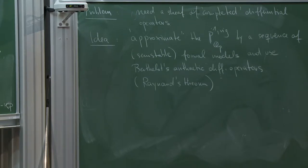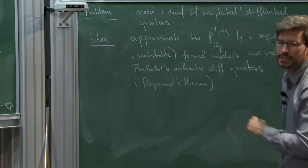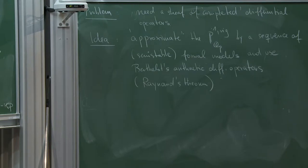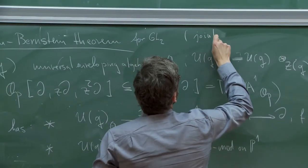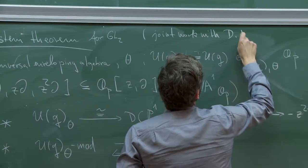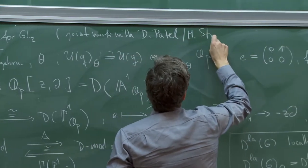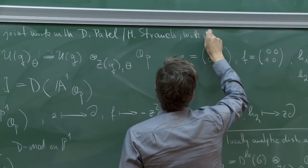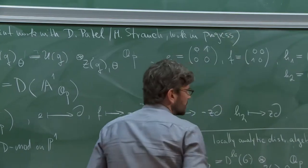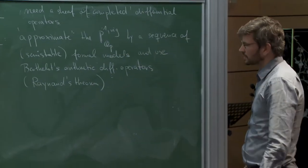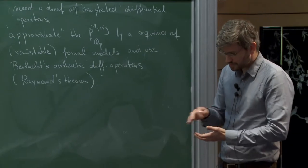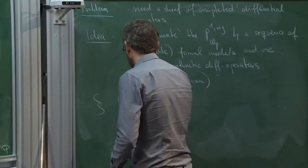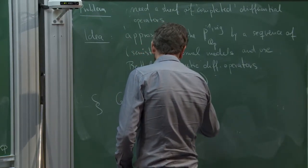The choice of the formal model will correspond to something on the Lie algebra side — you will get different things on the Lie algebra side. I will only deal with a certain sequence of semi-stable models, not with all semi-stable models. This is joint work with Deepam Patel and Matthias Strauch, and it is still a work in progress. The models will be related to certain parts of the Bruhat-Tits tree of GL2, and the parts will be combinatorial balls whose stabilizers are congruent subgroups.